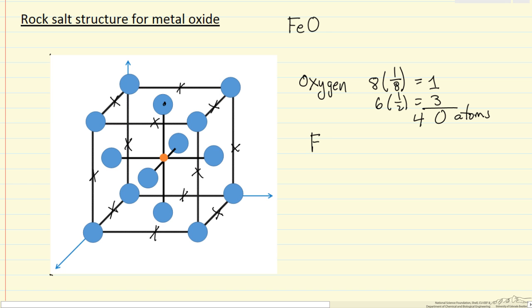So let's look at iron. We have one in the center, and then we have one, two, three, four, eight—we have twelve that are on the edges.